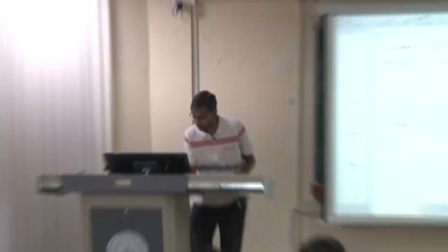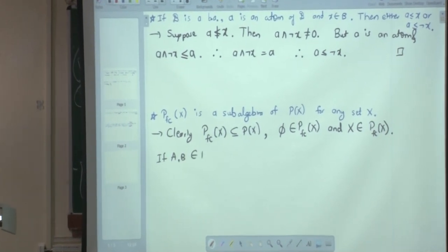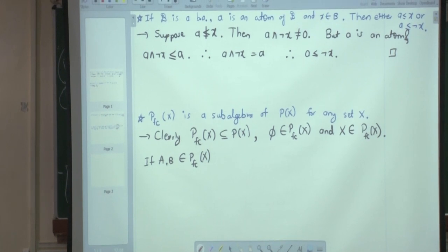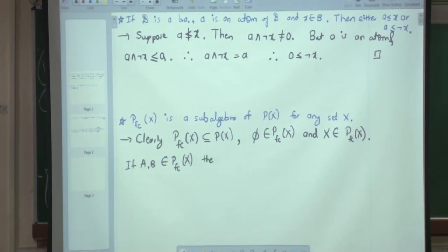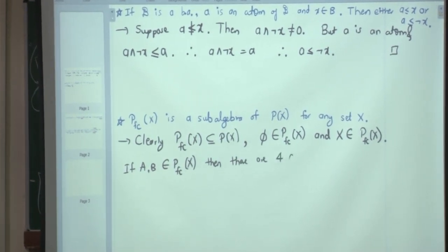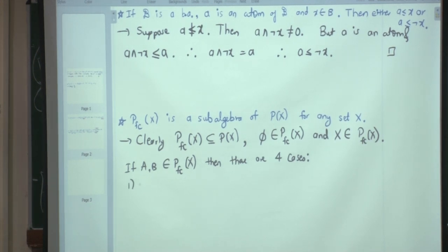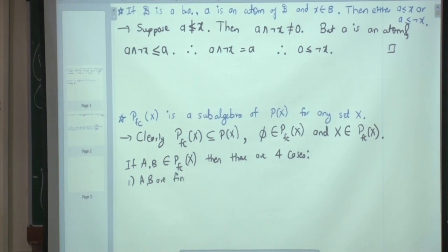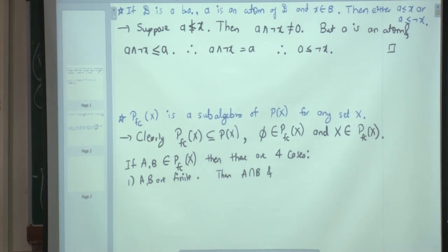We also need to check that the meet operation of the smaller set coincides with that of the larger Boolean algebra. If A and B belong to PFCX, there are four cases. First case: A and B are both finite. Then A ∩ B and A ∪ B are both finite, so they belong to PFCX.